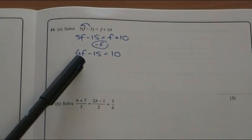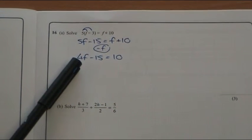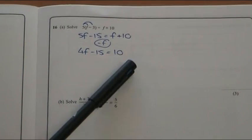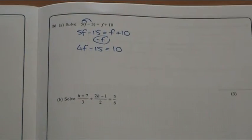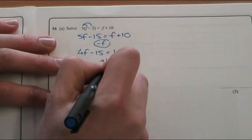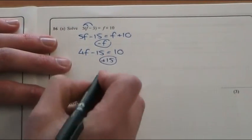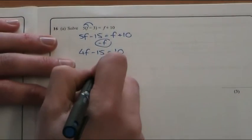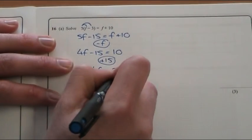Because the lettered terms, or the unknown terms, are here, the number terms need to be on the other side. You can see that this minus 15 is in the wrong place. So I'm going to add 15 to remove it, and if I do that to both sides to keep it balanced, I will get 4f equals 25.